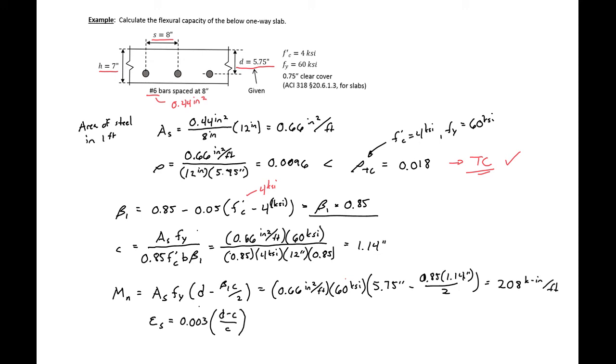We can also find the strain in our steel using similar triangles in our strain diagram. So 0.003 times D, 5.75 minus C, 1.14 divided by C, 1.14 to give us a strain of 0.012.